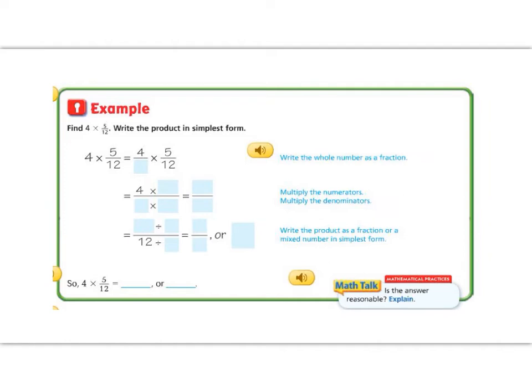In the next example, we are going to multiply four times five twelfths and answer in simplest form. When we multiply a whole number times a fraction, it's important to know that every whole number has an invisible one underneath it. Once we put on those x-ray glasses and see that invisible number one, then we do the same thing. We multiply straight across the top, four times five, and one times twelve. Four times five is twenty, and one times twelve is twelve. So we have the answer twenty twelfths.